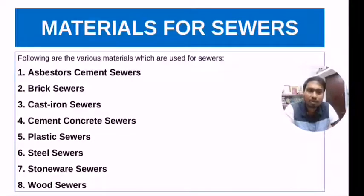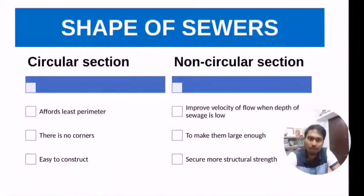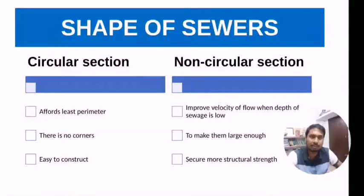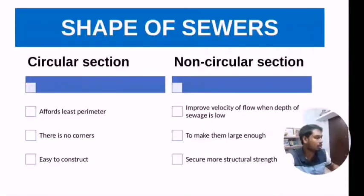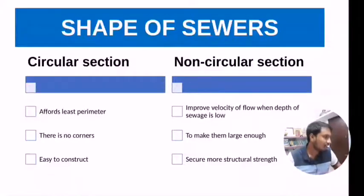Coming to the shape of sewers, generally we have two sections: circular section sewer pipe and non-circular section sewer pipe. Circular shapes are generally adopted in the field. The circular section offers less perimeter for the same cross-sectional area.